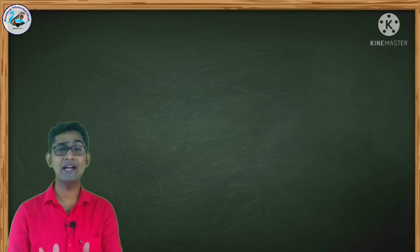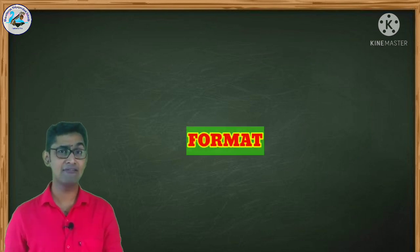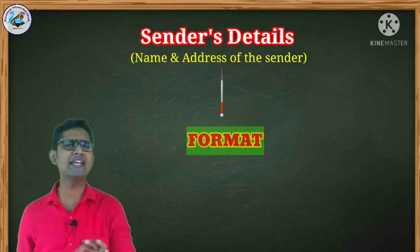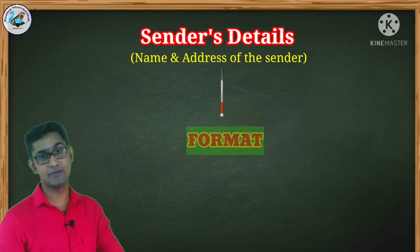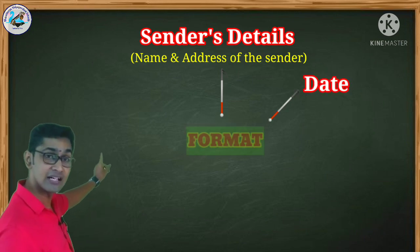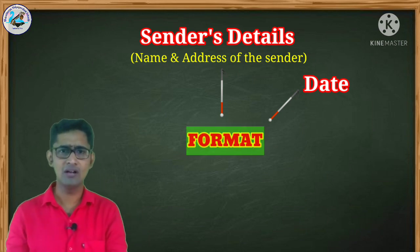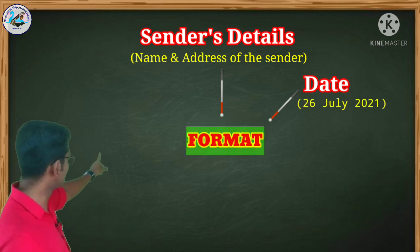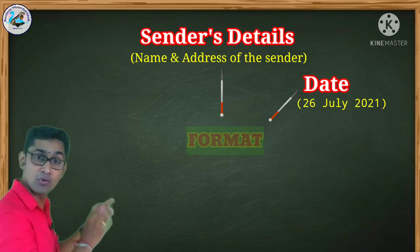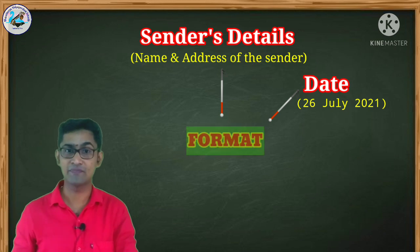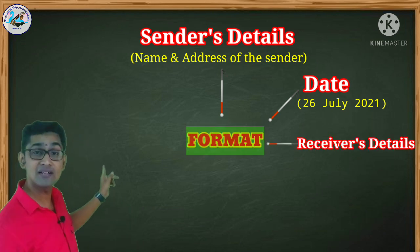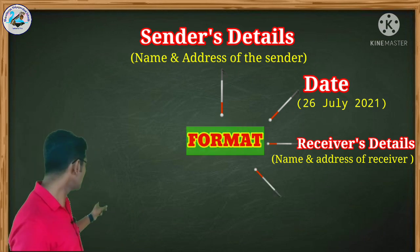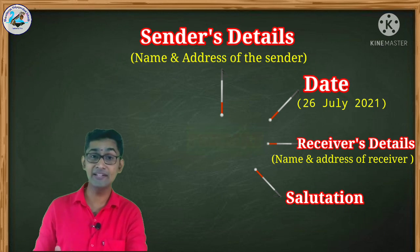Next we are going to discuss the format of a formal letter. A formal letter must have eight things. The first is the sender's address — the name and address of the sender should be mentioned here. The second is the date — for example, if you are writing on 26th July 2021, you write it exactly as '26th July 2021,' which is the most common format. The third is the receiver's address — the name and address of the receiver should be mentioned in this part.